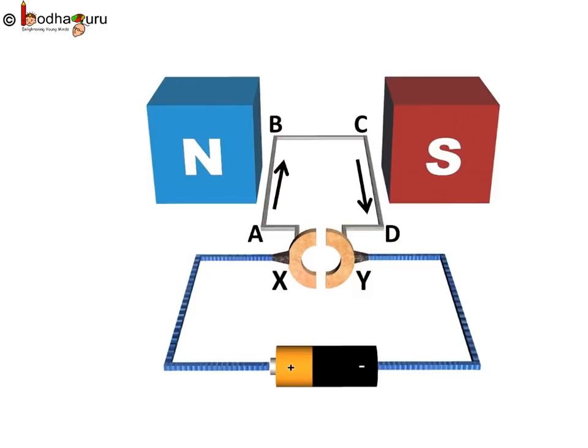So, now let us see how a simple electric motor works. If you notice the flow of current in the coil, we will notice that the current in the arm AB of the coil flows from A to B while in the arm CD it flows from C to D, i.e. it is opposite to the direction of current through arm AB.